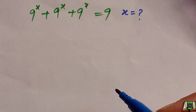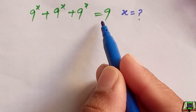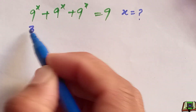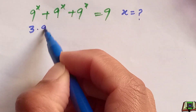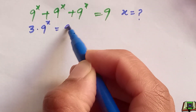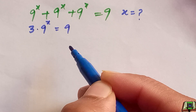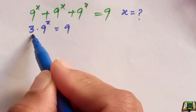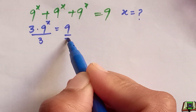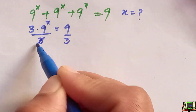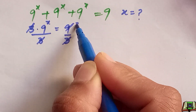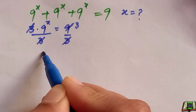Let's get started. We have 1, 2, and 3 times 9 raised to power x is equal to 9. Dividing both sides by 3, the 3s cancel out since 3 times 3 is 9.